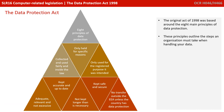The original Act of 1998 was based around eight main principles of data protection. Data should only be collected and used fairly and inside the law. It should only be held for specific reasons and only used for the registered purpose it was intended. The data collected should be adequate, relevant, and not excessive. It is the responsibility of the person collecting data to keep accurate and up-to-date records. They mustn't keep the data for longer than absolutely necessary, must keep it safe and secure, and must not transfer data outside the European Economic Area unless the receiving country has adequate data protection laws.